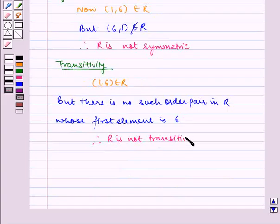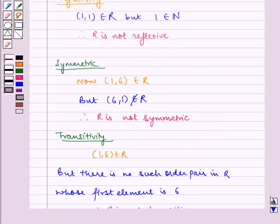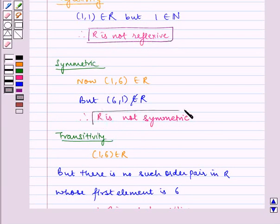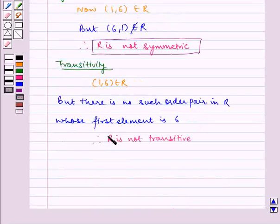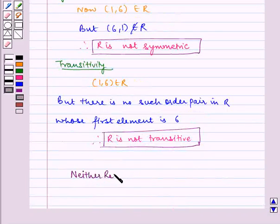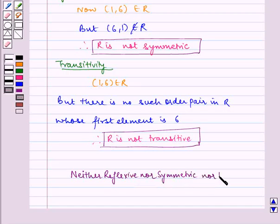Therefore, we can see that R is not reflexive, R is not symmetric, and R is not transitive. Hence, the answer is neither reflexive, not symmetric, not transitive.